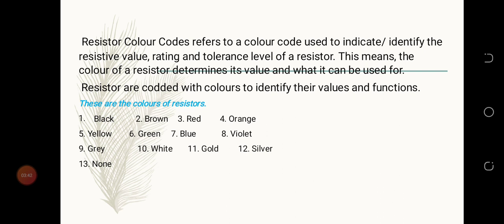These are the colors of resistors: black, brown, red, orange, yellow, green, blue, violet, gray, white, gold, silver, and none — meaning some resistors don't have any color. So these are the colors of a resistor.